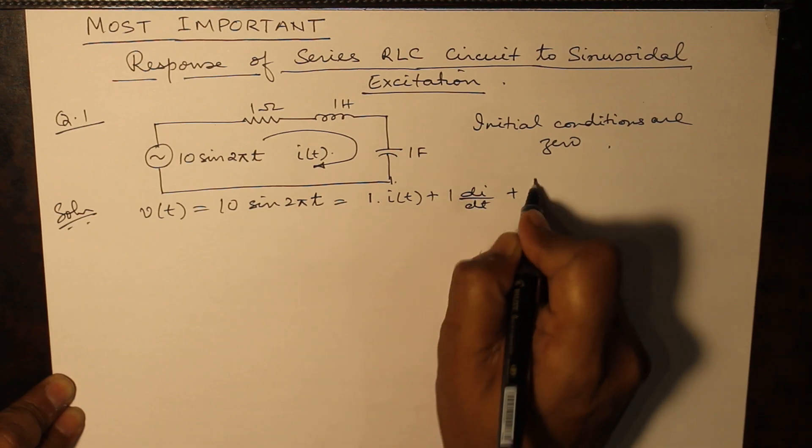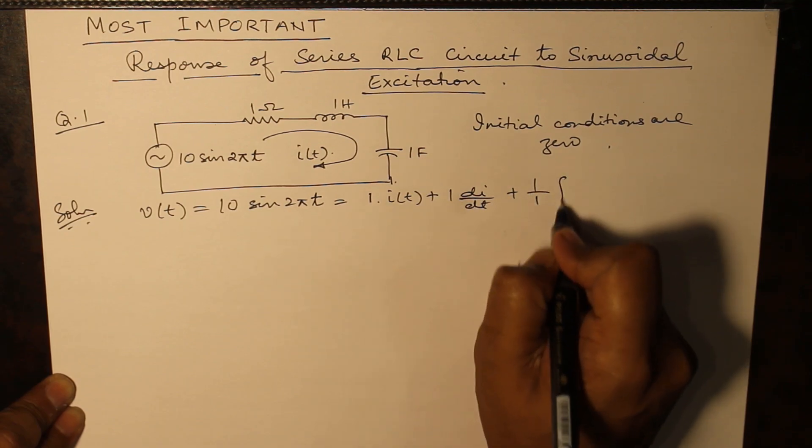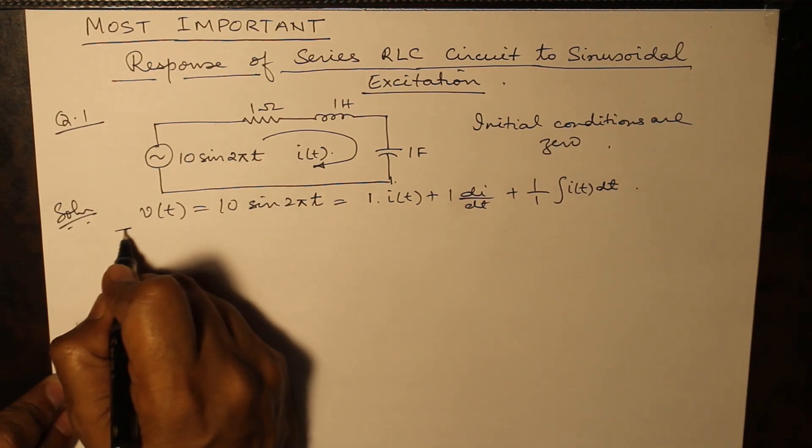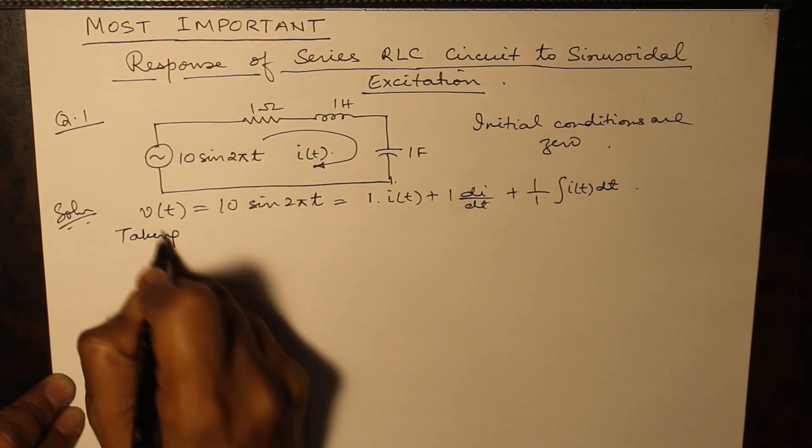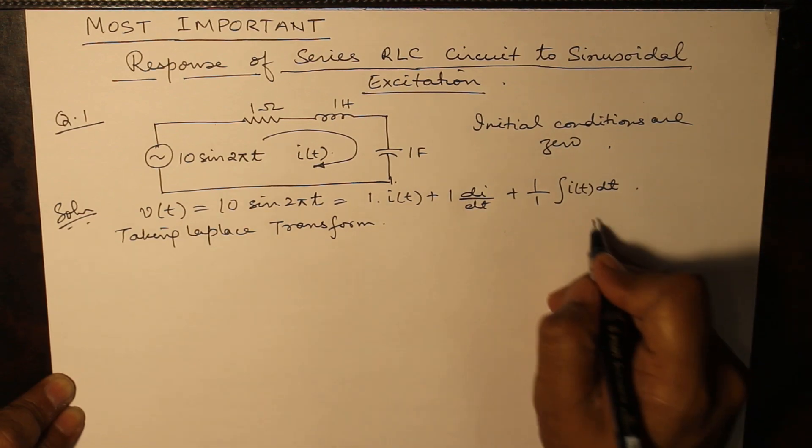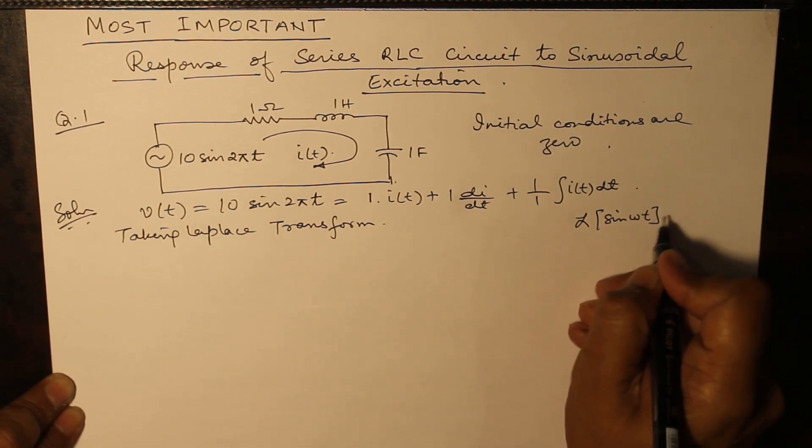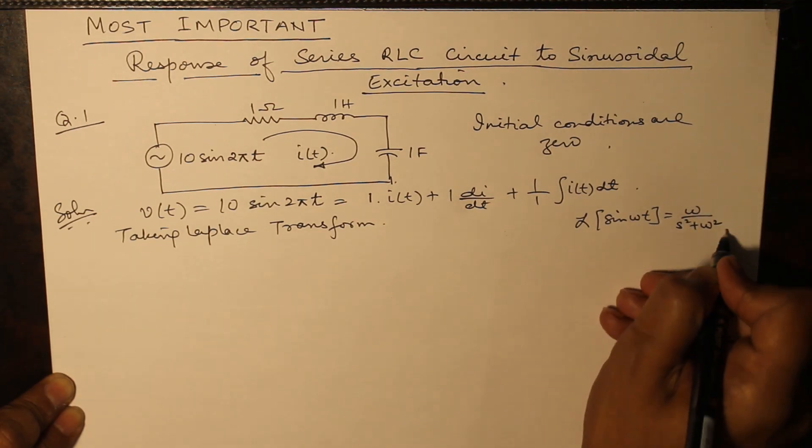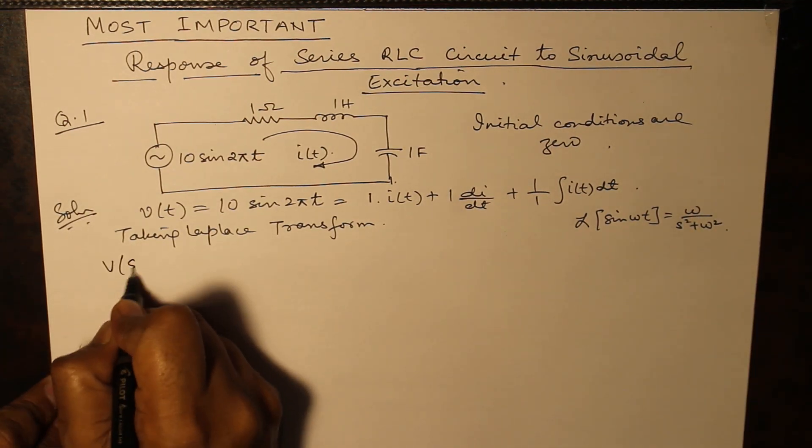1·di/dt plus 1 over 1 integral i(t) dt. Taking Laplace transform, knowing that Laplace of sine ωt is ω over s² plus ω², so V(s) which is equal to...